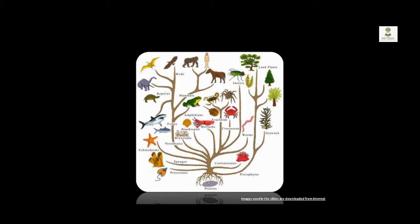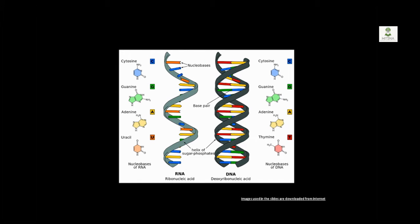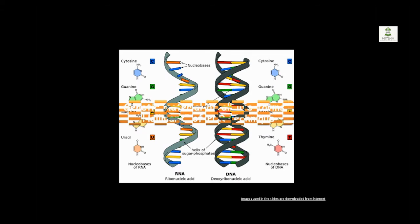Before going any further to our particular technique, let's have a look at this picture. This is a picture of evolutionary tree of life. Starting from the lowest microbes consisting of bacteria and fungi to the highly evolved humans and plants, all life forms possess DNA or deoxyribonucleic acid or RNA ribonucleic acid as their genetic material. And this genetic material is very important as far as our PCR technique is concerned since it can be considered as the basis or the hallmark of this PCR technique.